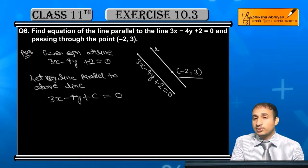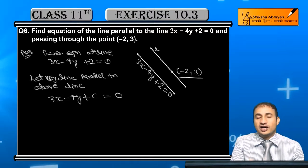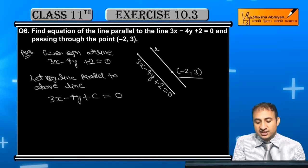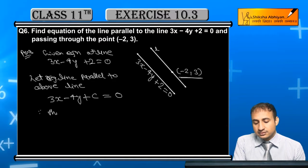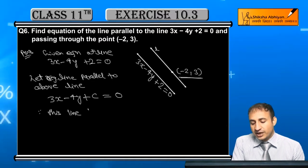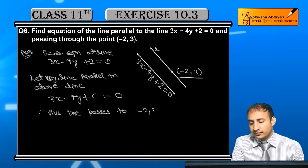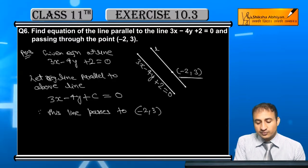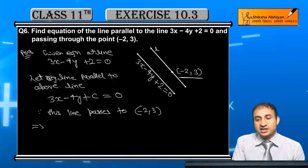Since this line passes through the point (-2, 3), therefore this implies that we substitute x equals -2 and y equals 3.